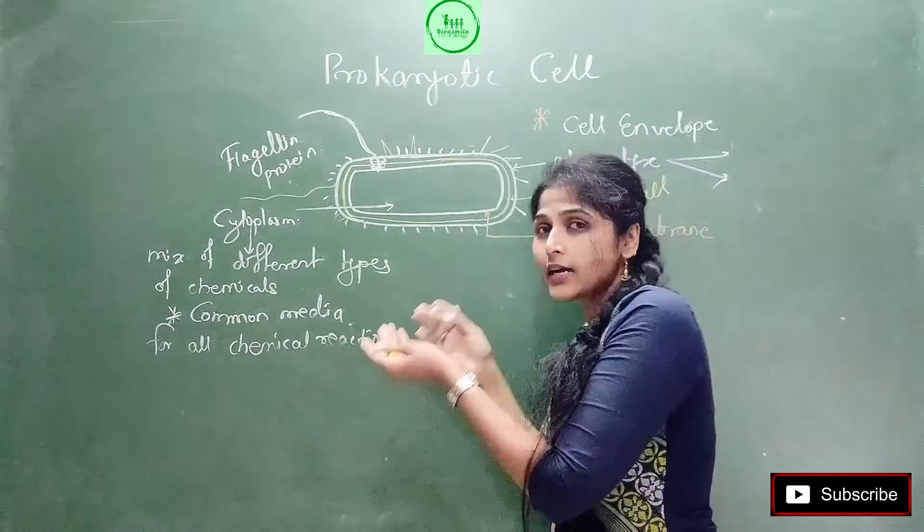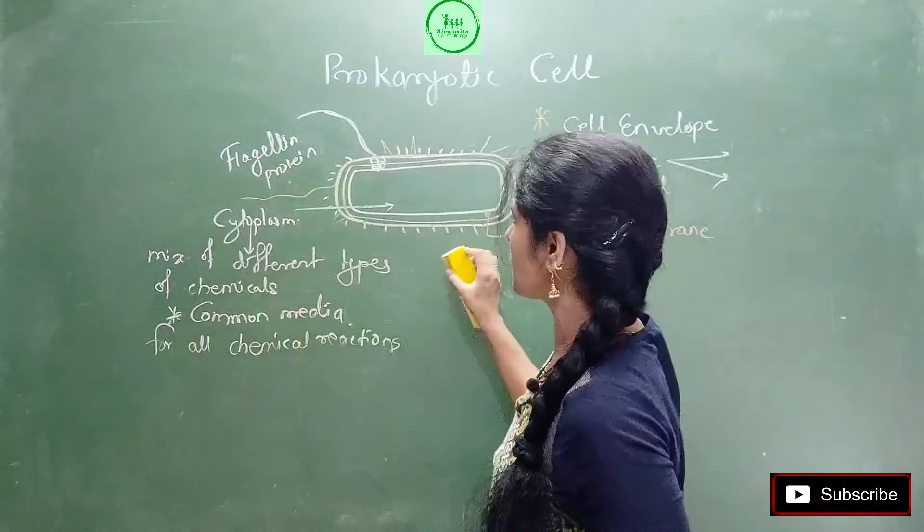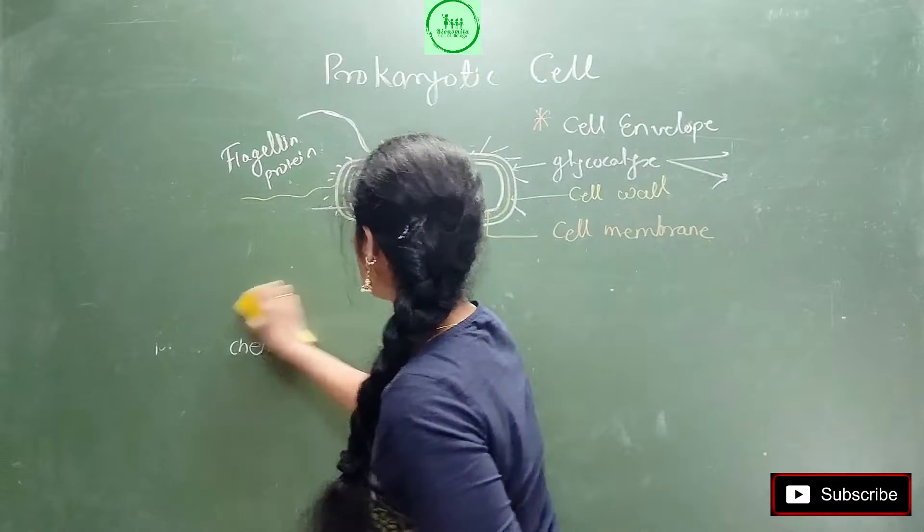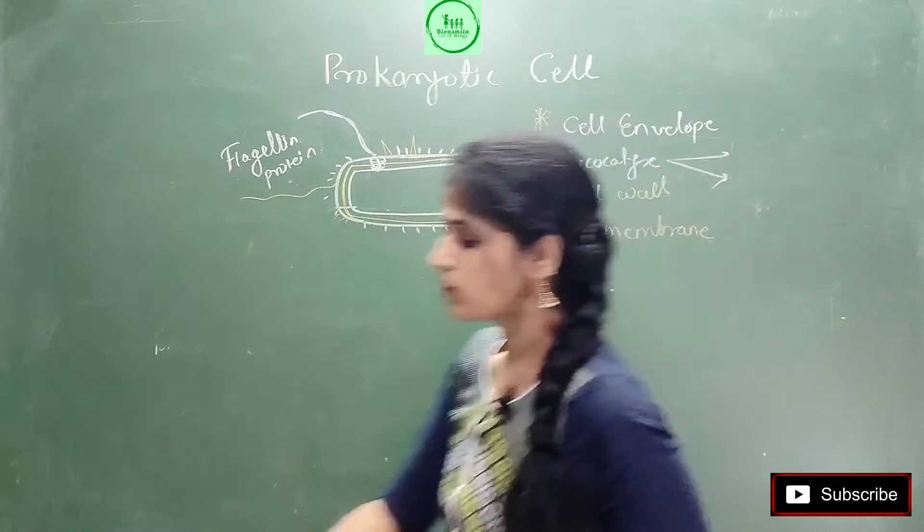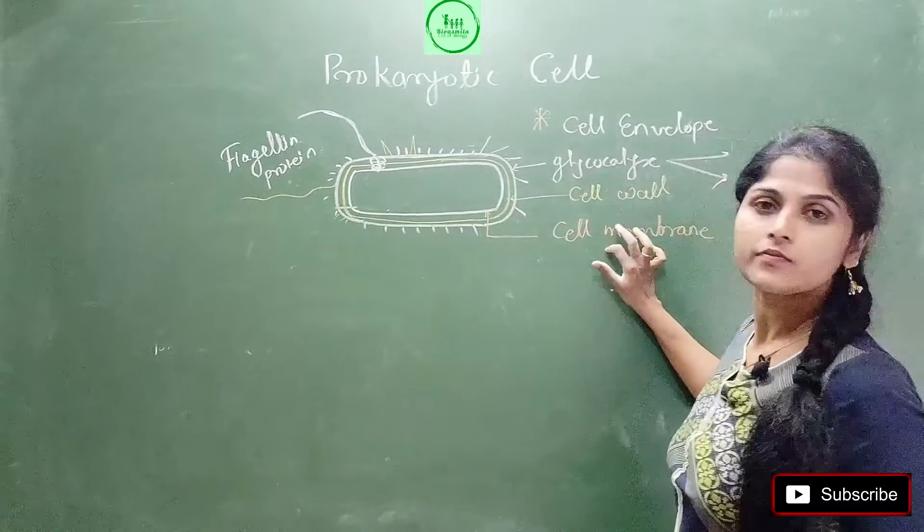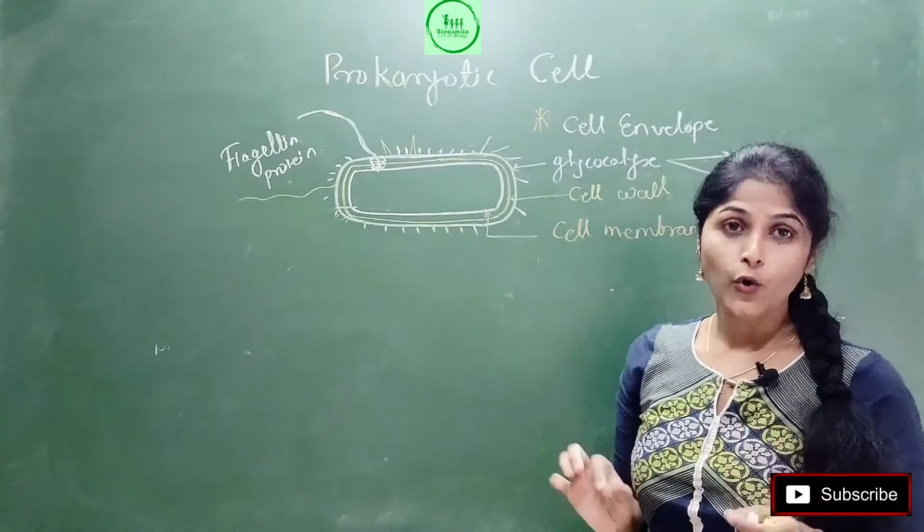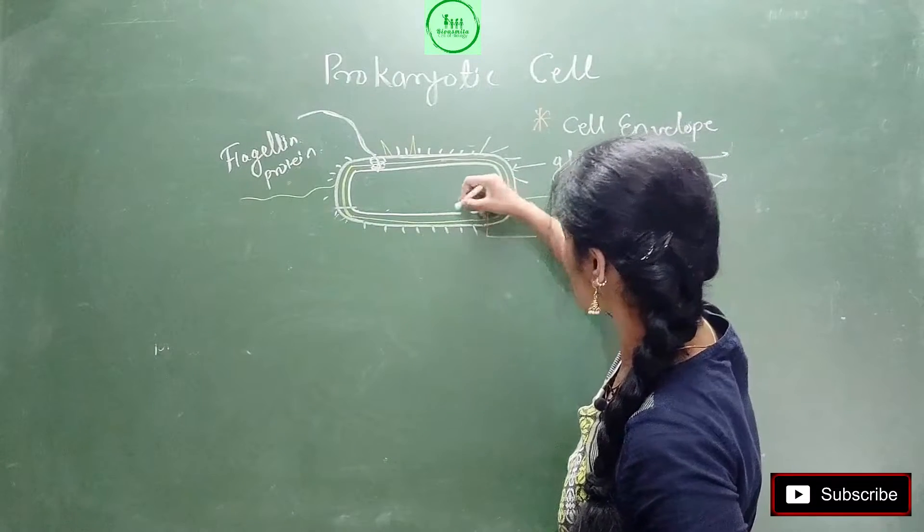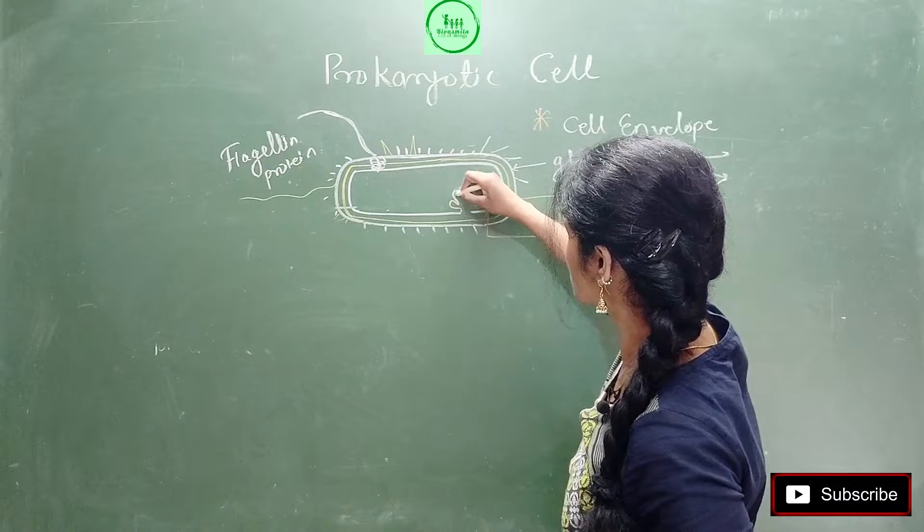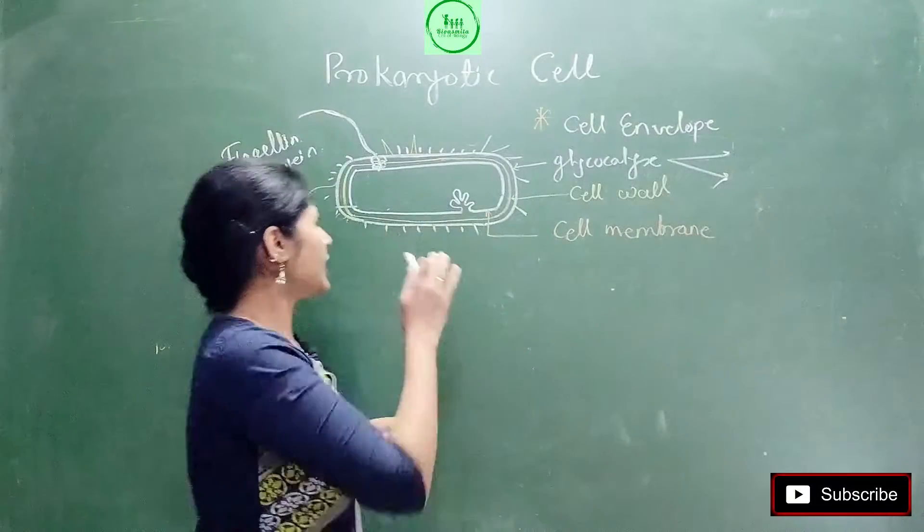Now inside that cytoplasm, the most important part we will discuss. See, this innermost layer, which is the innermost drawn layer, is called cell membrane. In the bacteria, in the prokaryotic cell, at certain points this bacterial cell membrane has some folds. In many numbers, folds can be present.